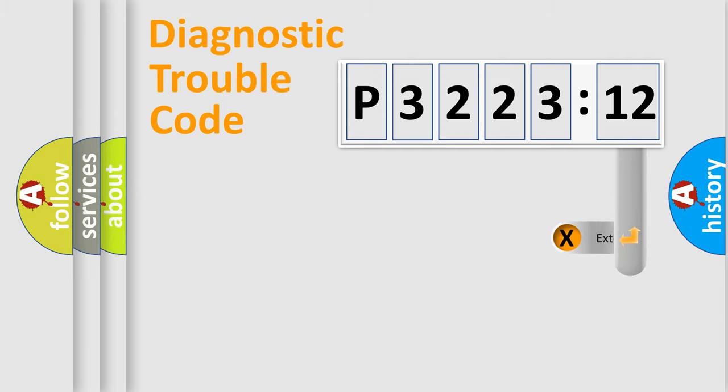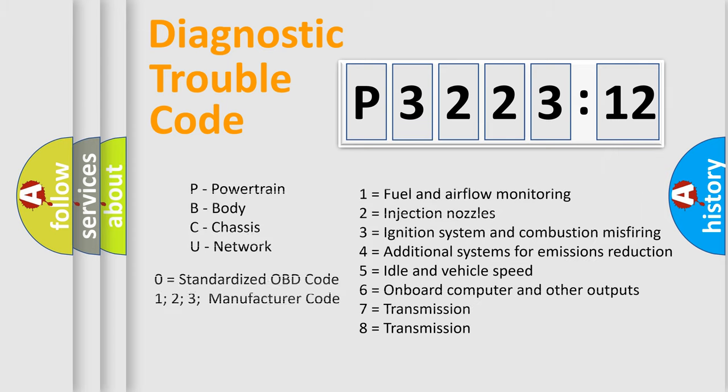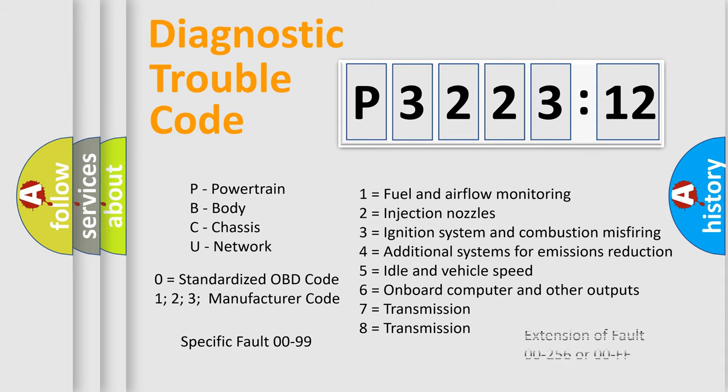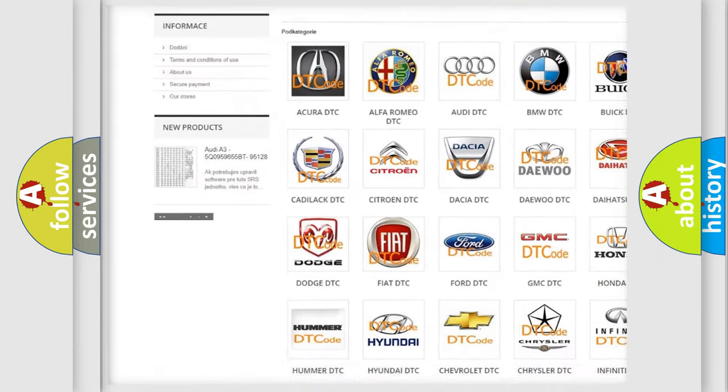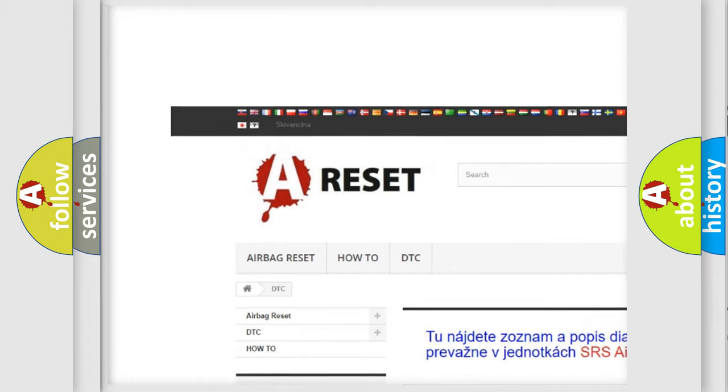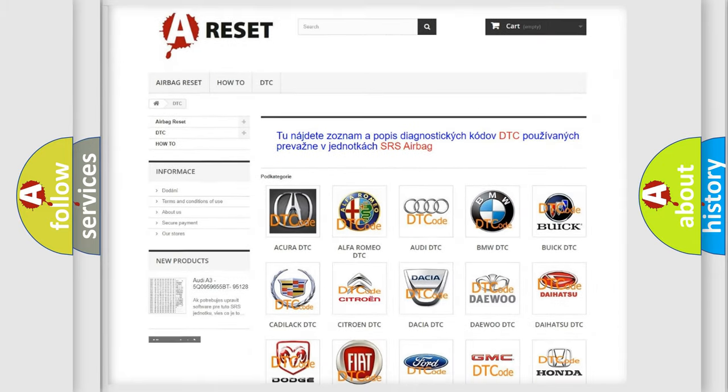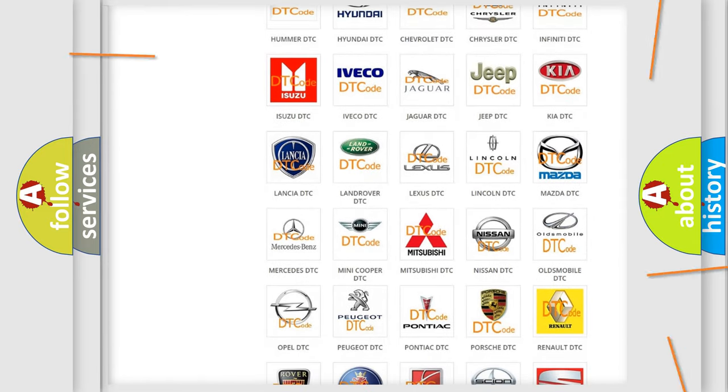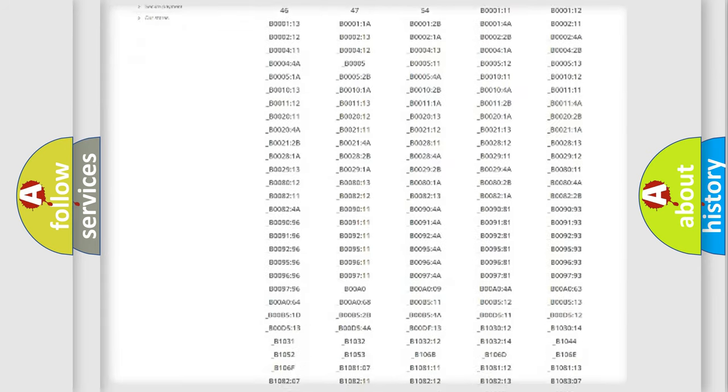Our website airbagreset.sk produces useful videos for you. You do not have to go through the OBD2 protocol anymore to know how to troubleshoot any car breakdown. You will find all the diagnostic codes that can be diagnosed in Nissan vehicles, and many other useful things. The following demonstration will help you look into the world of software for car control units.